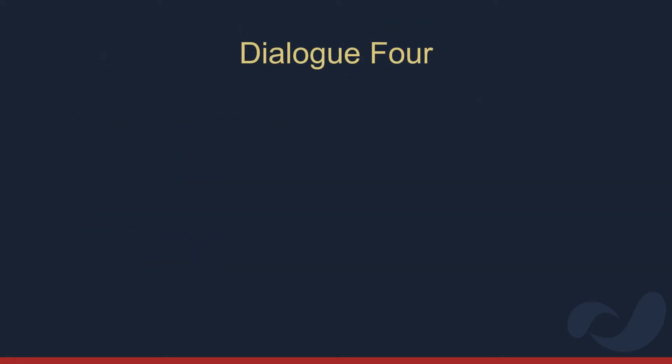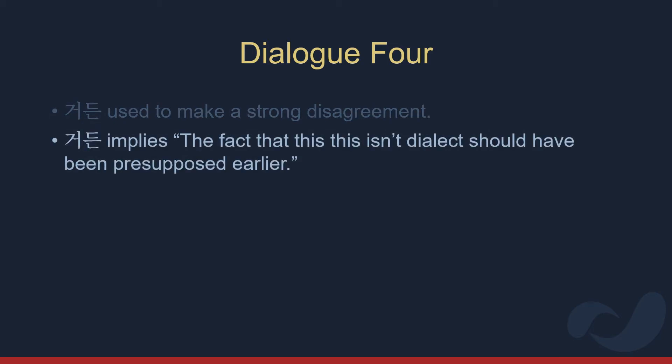Here the speaker uses 거든 to make a strong disagreement with the other person. Even though he doesn't know the meaning of 아리용, he's saying it's definitely not a dialect, but rather slang from his students' generation. In doing so, he uses 아니 not once, but twice. This could have been repeated for two reasons. Firstly, he may have suddenly realised that considering 아리용 as a dialect is too absurd. Secondly, he may have suddenly recalled that the topic of conversation was about the generation gap and that 아리용 is an example of this gap. In either scenario, 거든 implies the fact that this isn't a dialect should have been presupposed earlier and makes his expression of disagreement stronger.